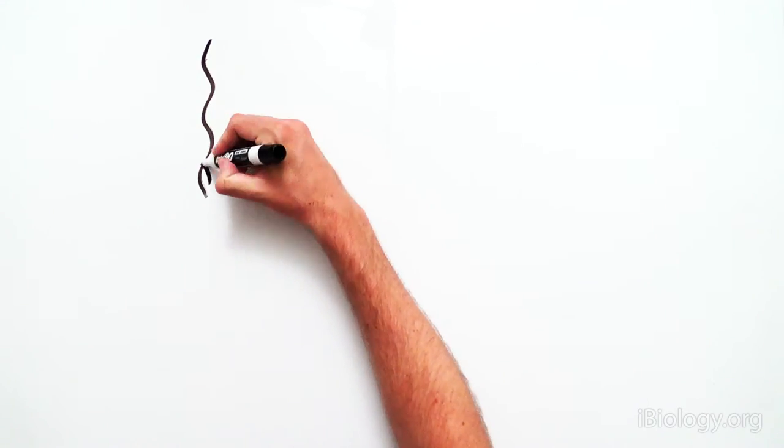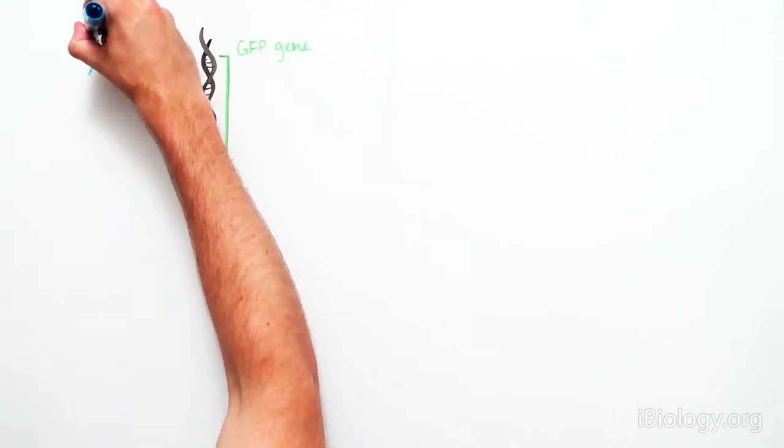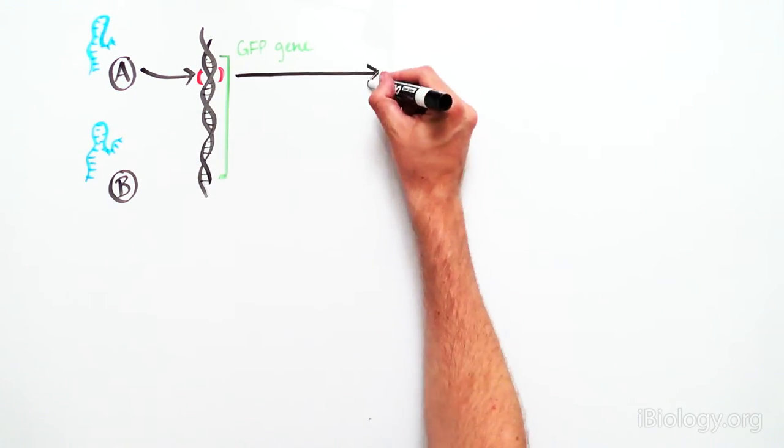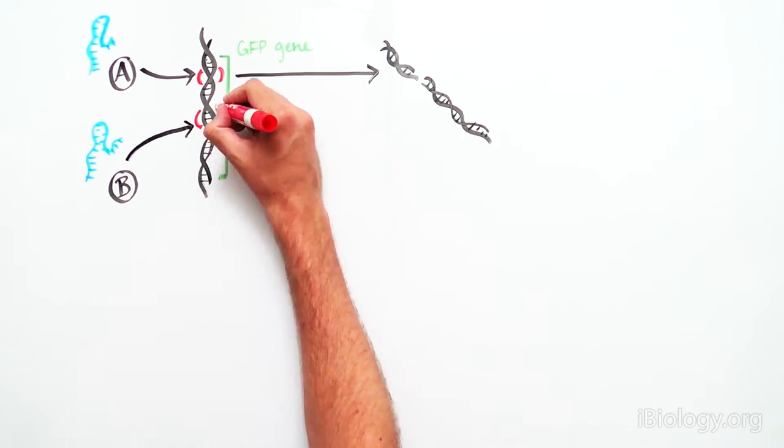When the RNA molecules were designed to bind to different regions of the GFP sequence, the GFP DNA sequence was cleaved at that specific location.